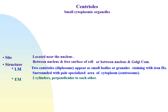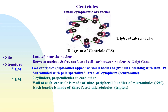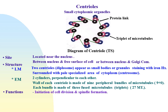The wall of each centriole is made of nine peripheral bundles of microtubules (9+0). Each bundle is made of three fused microtubules called triplets. Thus, the wall of each centriole is formed of 27 microtubules.